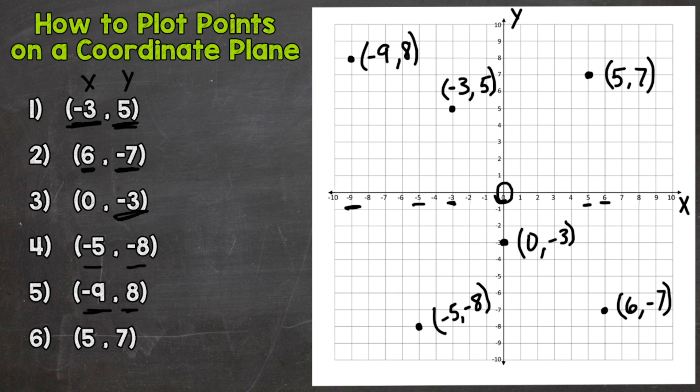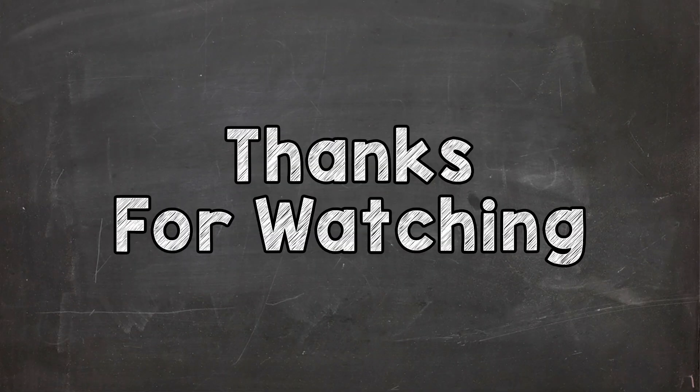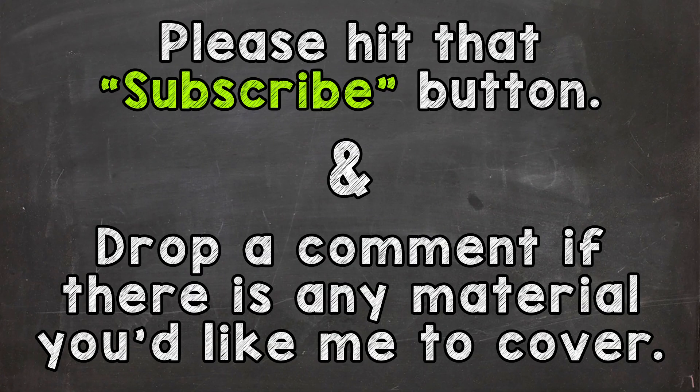So there you have it. There's how you plot points on a coordinate plane. Just remember, x is horizontal, side to side. And y is up and down, vertical. Your x-coordinate always comes first. Always go side to side, then up or down. Thanks so much for watching. Until next time, peace.